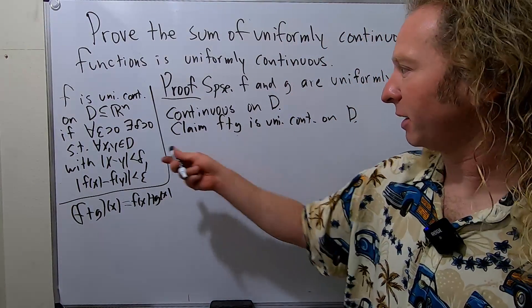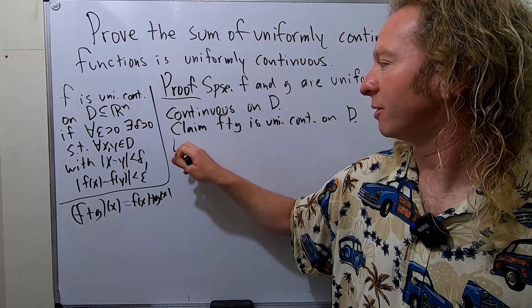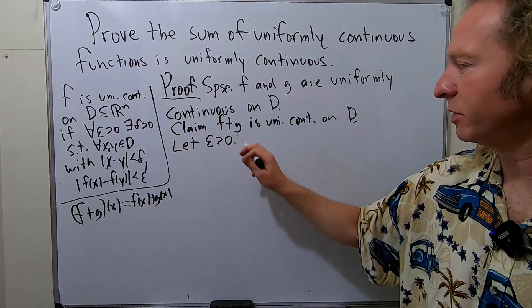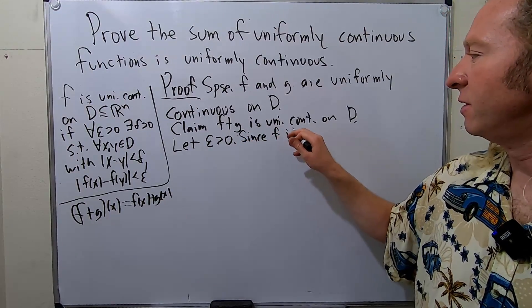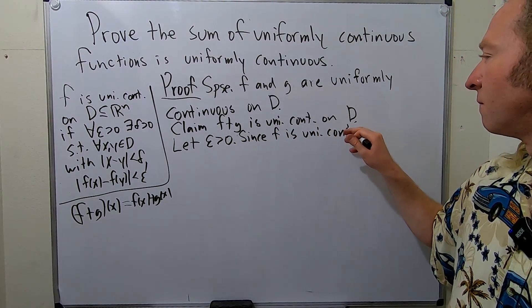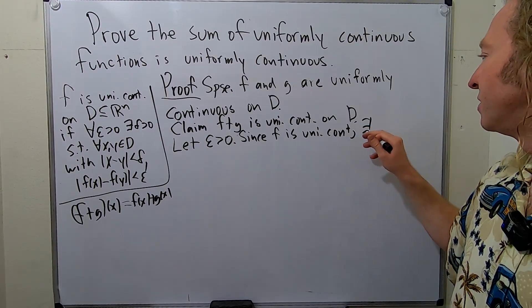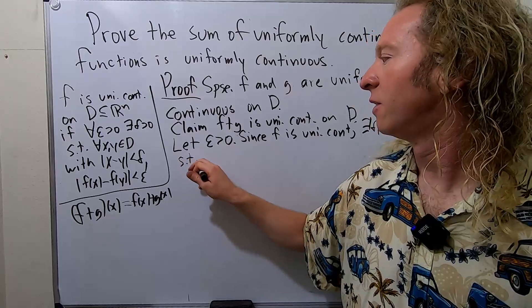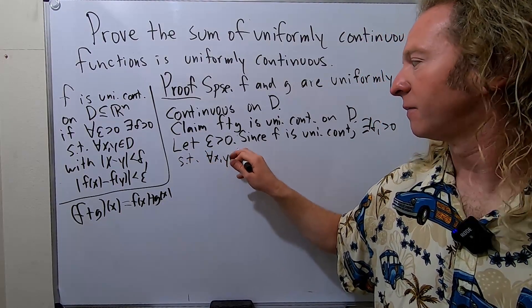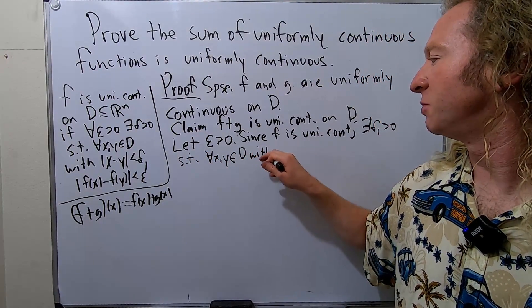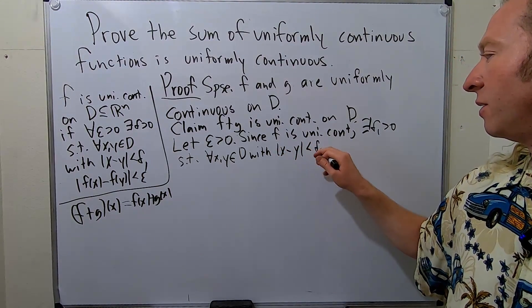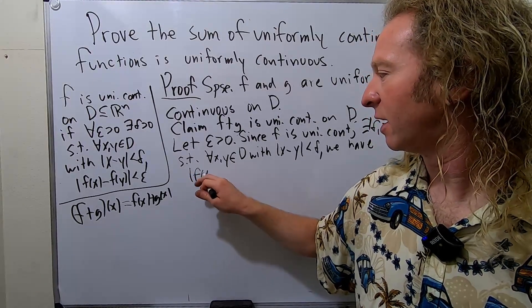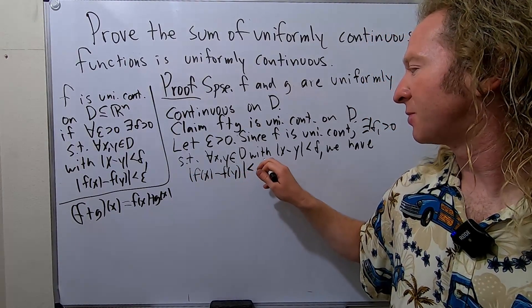Let epsilon be greater than 0. Since F is uniformly continuous, there exists delta_1 greater than 0 such that for all x, y in D with the distance between x and y less than delta_1, we have the distance between f(x) and f(y) less than epsilon over 2.